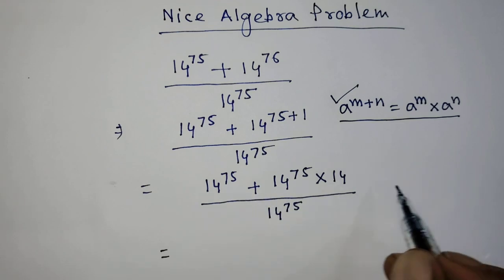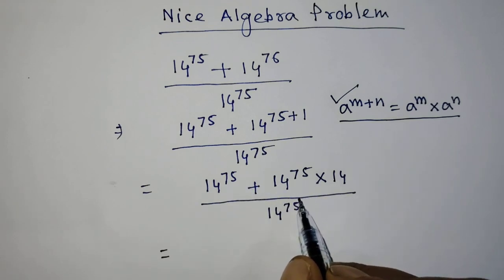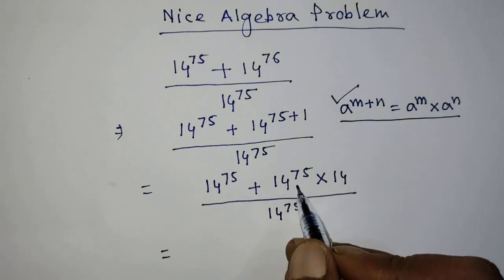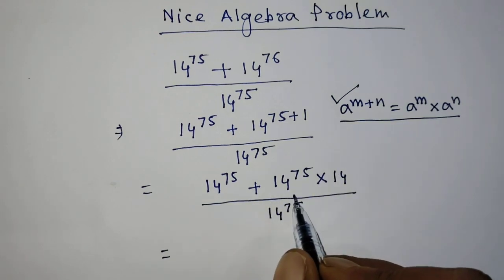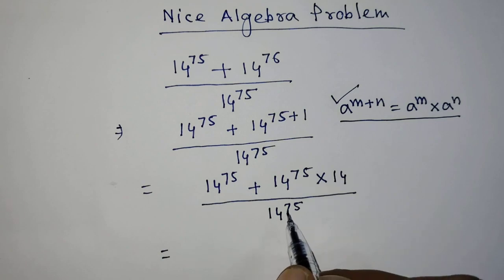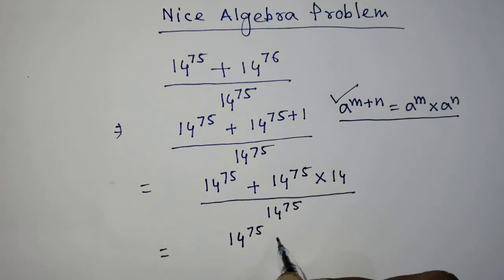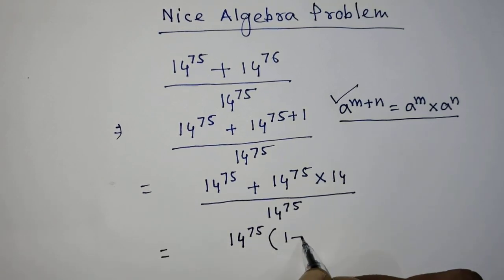In the numerator there are two terms and the common factor of both terms is 14 to the power 75. So we can write the numerator as 14 to the power 75 times, in parentheses, 1 plus 14.